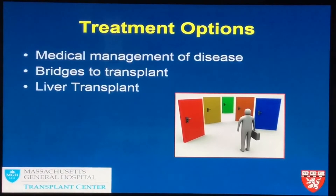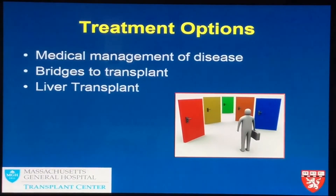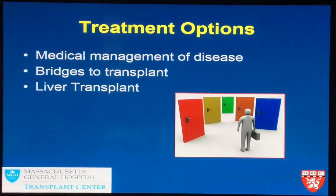Prior to coming to your transplant evaluation, you have had some medical management locally — either your primary care doctor or your gastroenterologist has been medically managing you. You may have had problems with fluid, mental confusion, or encephalopathy. You may have fluid in your belly called ascites, or fluid in your lower extremities. We want to help bridge the gap between your evaluation and the time of a liver transplant offer, and today we'll talk about how we get you towards liver transplant listing.